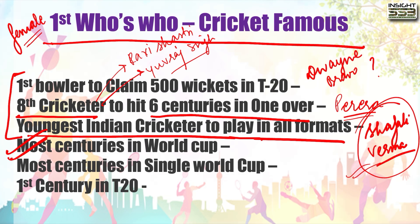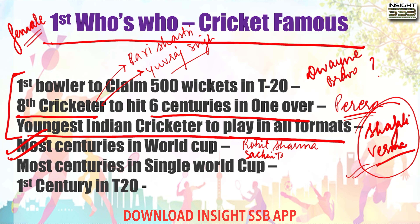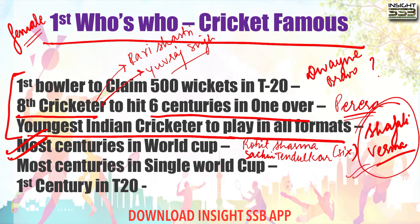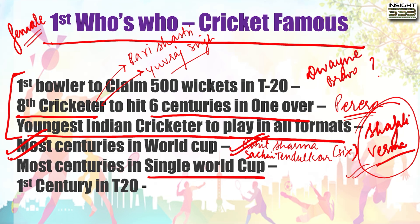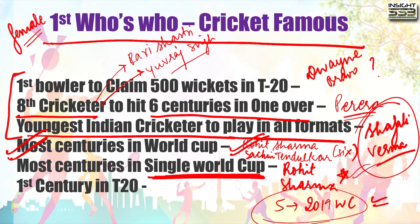Who has scored the most centuries in the World Cup? The answer is both Rohit Sharma and Sachin Tendulkar - they both have scored 6 centuries. If asked recently, it is Rohit Sharma. For most centuries in a single World Cup, the answer is Rohit Sharma - he scored 5 centuries in the 2019 World Cup. That is a very big achievement - star mark this.